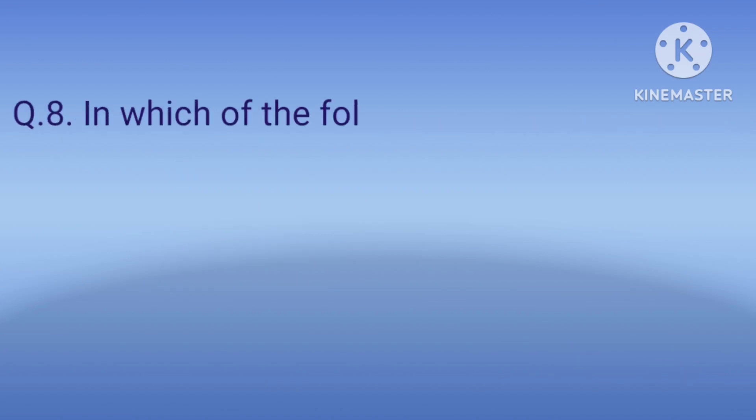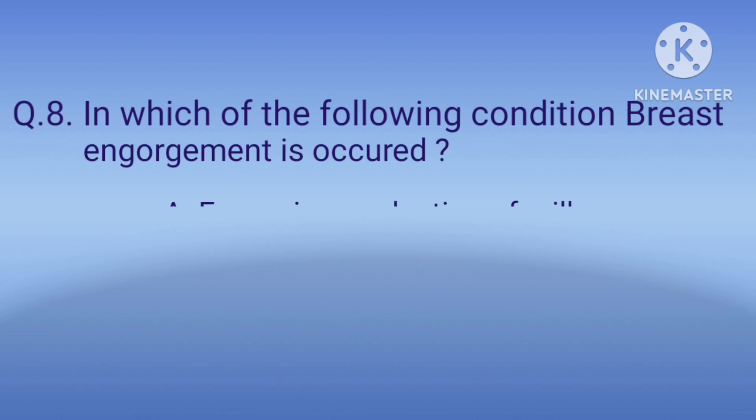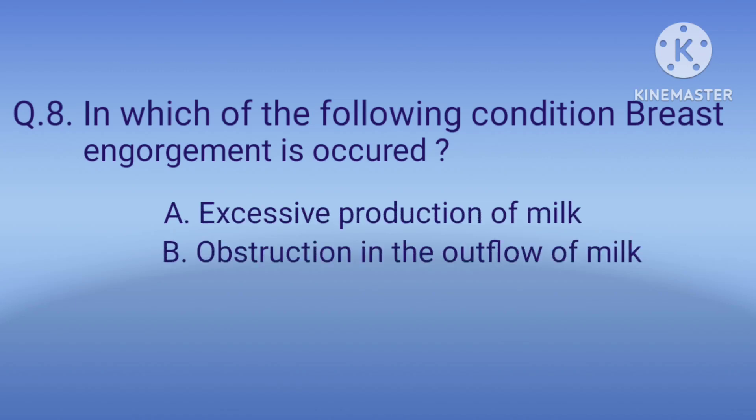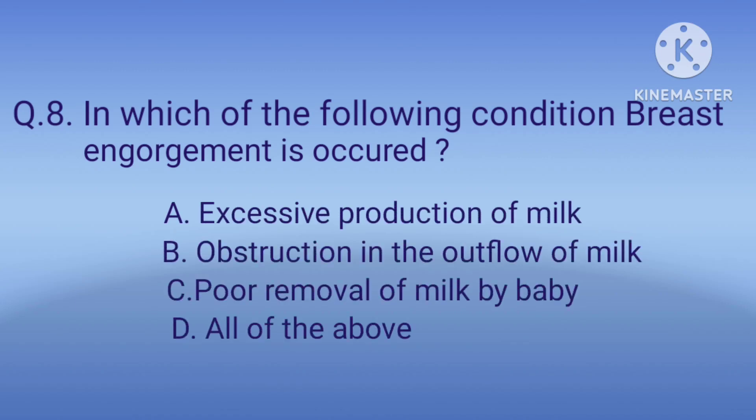Question 8: In which of the following conditions does breast engorgement occur? Option A: excessive production of milk, option B: obstruction in the outflow of milk, option C: poor removal of milk by the baby, option D: all of the above. The correct option is D, all of the above.